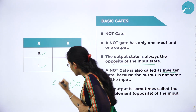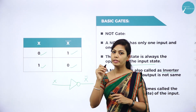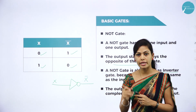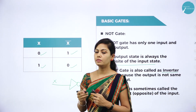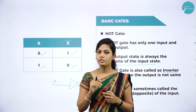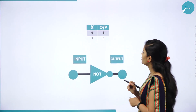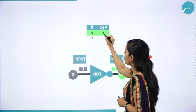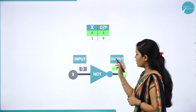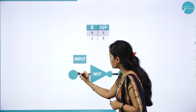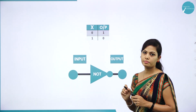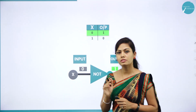If your input is X, the output will be X bar. If your input is Y, the output will be Y bar. NOT gate is also known as inverter — it has only one input and one output. For example: if your input is 0, the output is 1; if your input is 1, the output is 0. You can see the logic diagram — this is the input and this is the output.